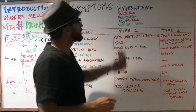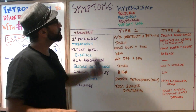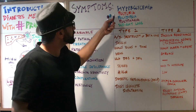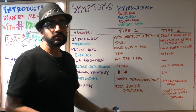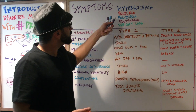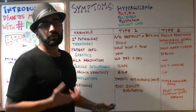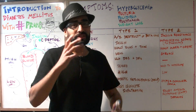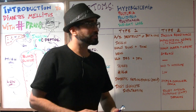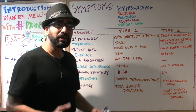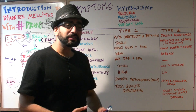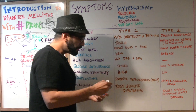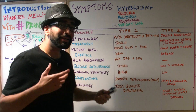Symptoms we talk about are: hyperglycemia — high blood glucose levels; polyuria — the patient is urinating a lot; polydipsia — because they're urinating a lot they feel very thirsty and keep drinking lots of fluids; polyphagia — lots of food intake; and you're also going to see weight loss, where the patient may be losing weight inappropriately.